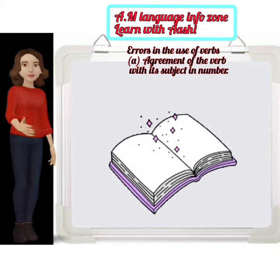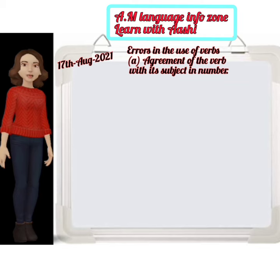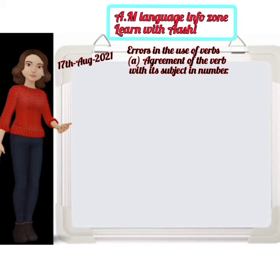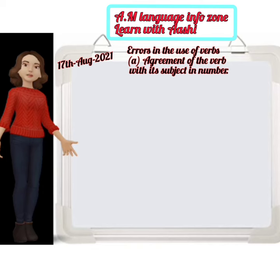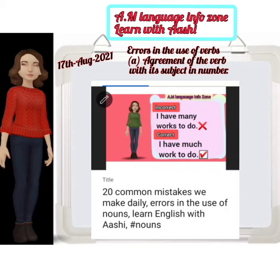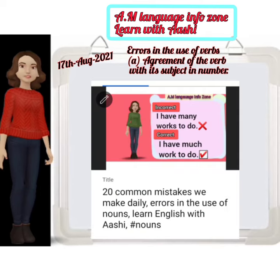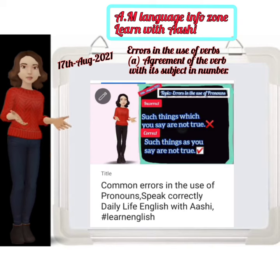Today we are going to learn errors in the use of verbs — it's about agreement of the verb with its subjects in number. Before this, we have learned about errors in the use of nouns and secondly the error in the use of pronouns.